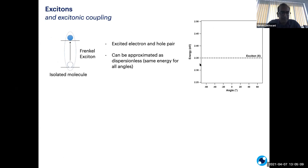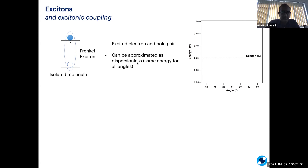As we often know, excitons are something most of us have already encountered in mostly all the organic semiconductor materials, because of their low dielectric constant they can support this coulombically bound electron-hole pair. This can be approximated as dispersionless because the energy remains the same wherever and however you shine light on this molecule — I've drawn that as a horizontal line representing an exciton.